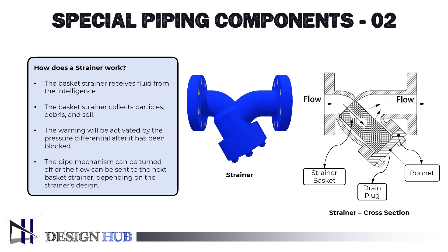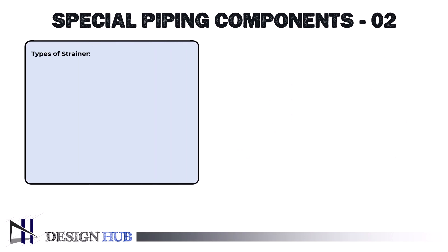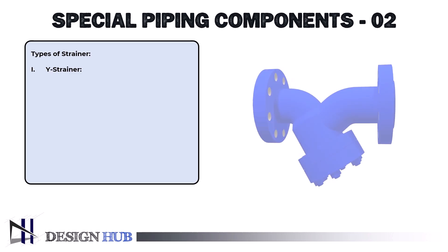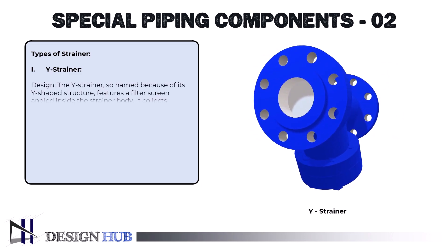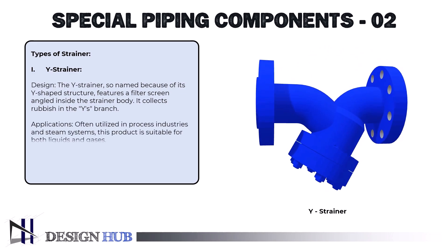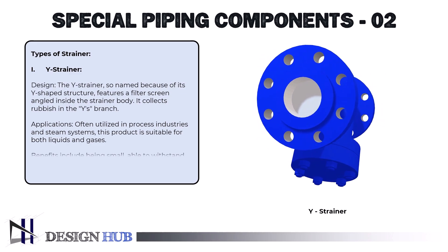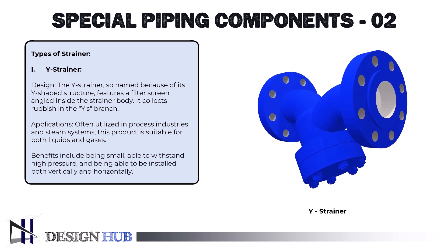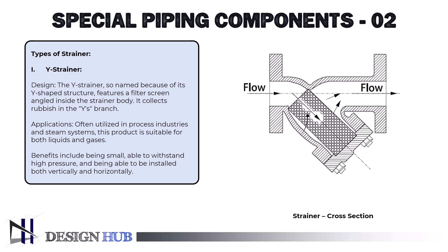Let's go through strainer types. The first one is the Y strainer. The Y strainer, so named for its Y-shaped structure, features a filter screen angled inside the strainer body. It collects rubbish in the Y's branch. Applications: often utilized in process industries and steam systems, this product is suitable for both liquids and gases. Benefits include being small, able to withstand high pressure, and being able to be installed both vertically and horizontally.